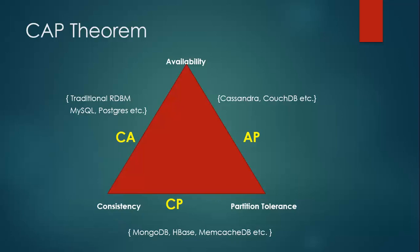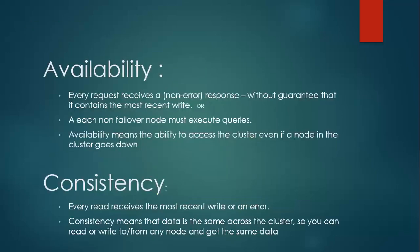Let me explain these properties one by one. First, availability — availability can be achieved by replicating the data across different machines, which means data would be available on multiple nodes. Second, consistency — consistency is achieved by updating several nodes before allowing further reads. Once data is updated on various nodes, then it would be available for read.